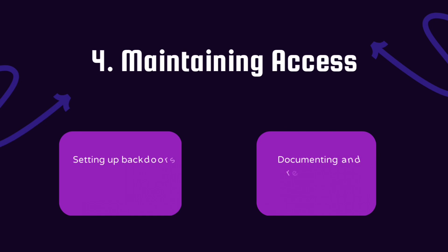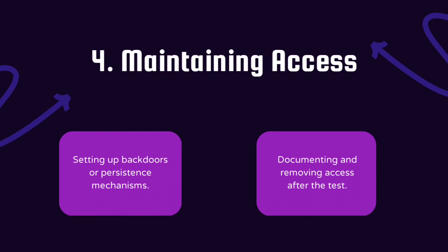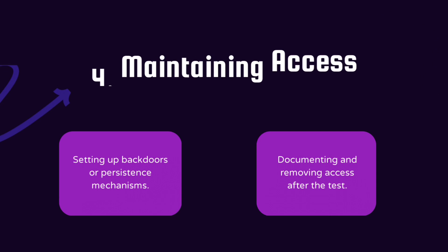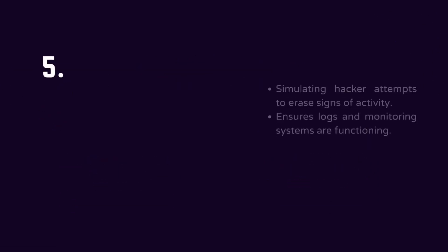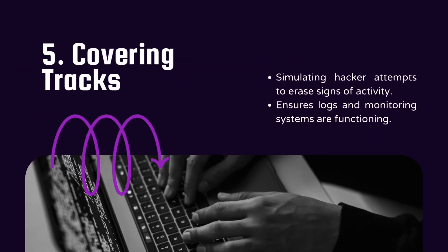Hacking doesn't stop at gaining access — hackers often try to maintain access to the system so they can return later. Ethical hackers also test this phase by installing backdoors or persistence mechanisms, only to document and then remove them after the test is completed.